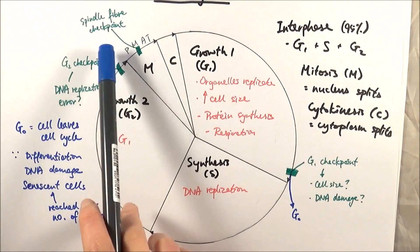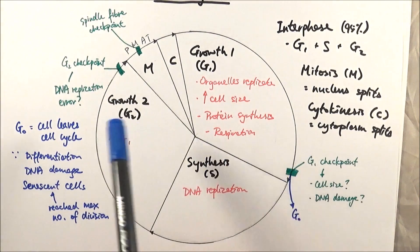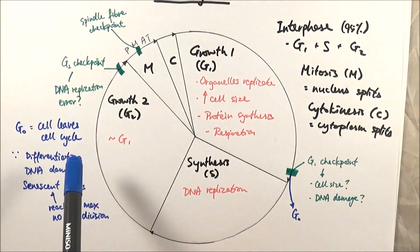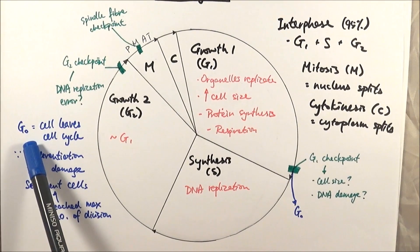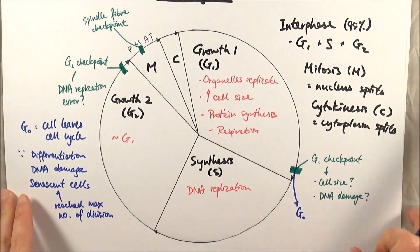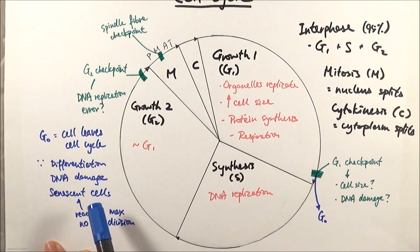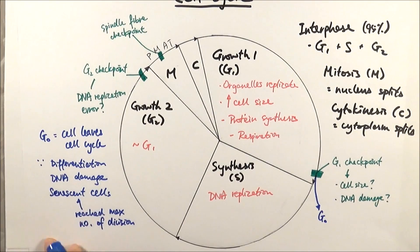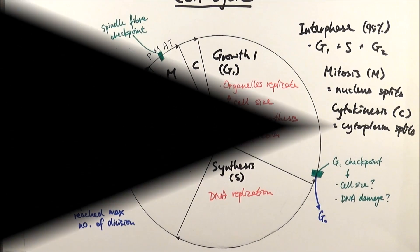If there is ever a problem in these checkpoints, the cell leaves the cell cycle and enters the G0 phase, which is the cell arrest. There are a couple of reasons for it: because the cell is differentiated or specialized, or that we found there are DNA damage or DNA errors there, or the fact that the cell has become senescent—that they can't divide any more times than they already have.